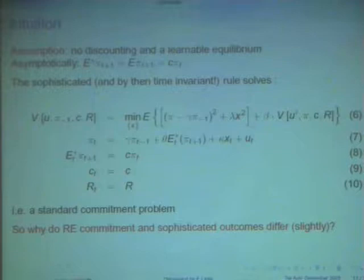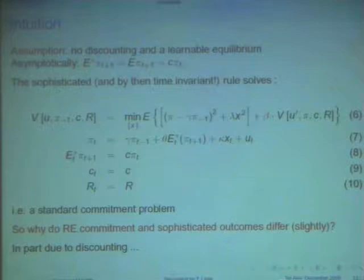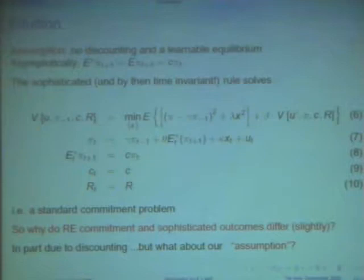Asymptotically, the E star will behave like E. It will be some autoregression that correctly describes the law of motion of the system. Then, just look at that problem asymptotically. That's exactly a commitment problem. So, one could ask, so why is it that, if my claim is right, why is it that their results are a little bit different from commitment outcomes? They still differ. Well, in part, it's due to discounting. So, with discounting, it's kind of hard to learn the true model.